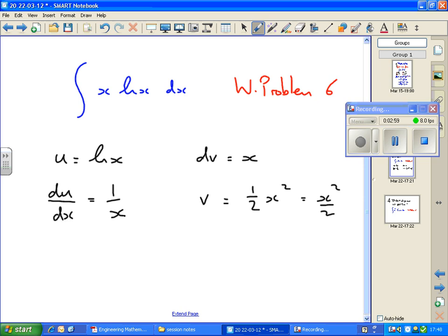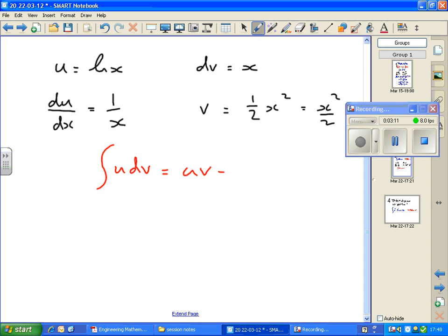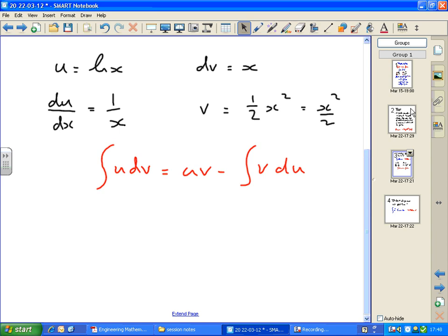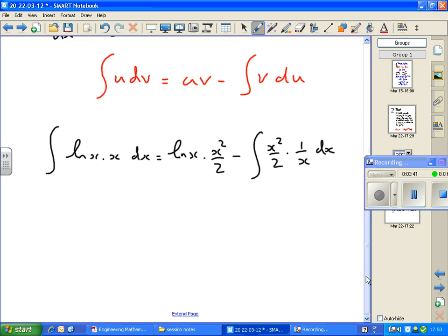So now we put this into the integration by parts formula. Integral of u dv equals uv minus the integral of v du. This will appear on the exam paper, but there's another one of those ones that's not that difficult to remember, if you use it enough. So now we just plug them in.